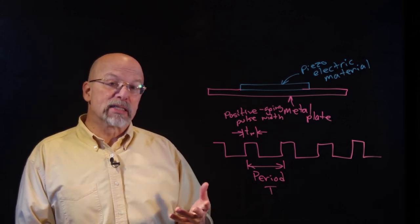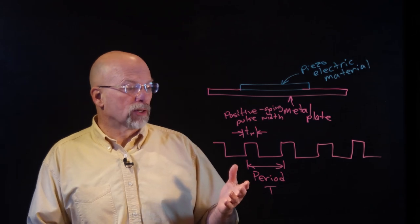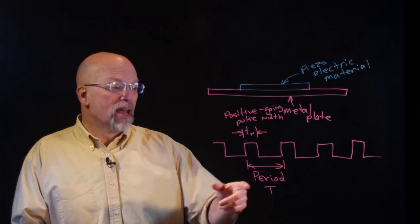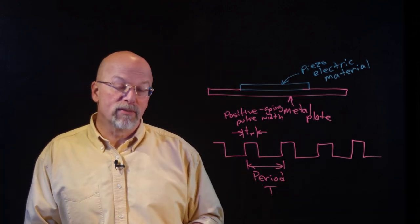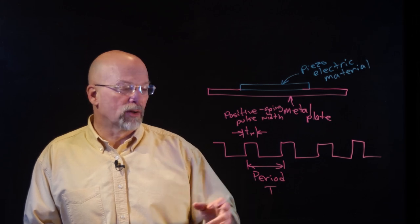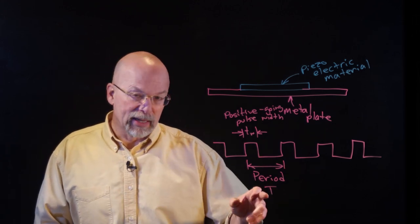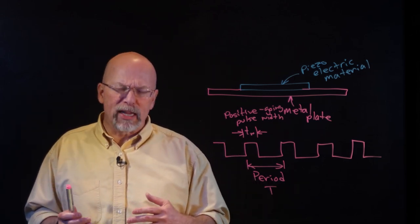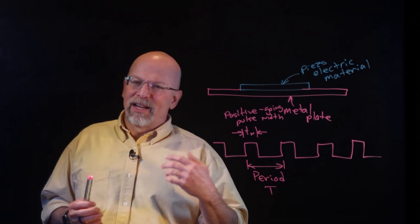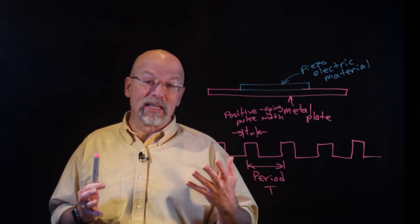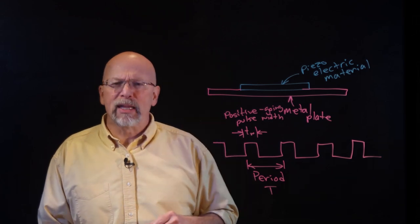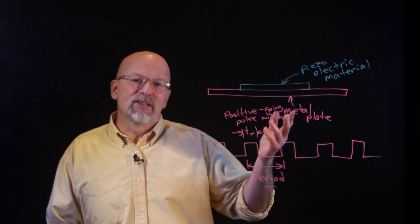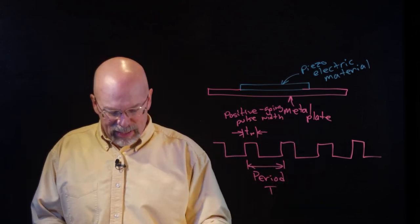A PWM signal allows us to change both of these characteristics. For our period, what we want to do is define a period that is in the audible range of our speaker. A speaker should be able to accurately reproduce sound in the full range of human hearing — from down to about 50 or 100 hertz up to 18,000 or 20,000 hertz.